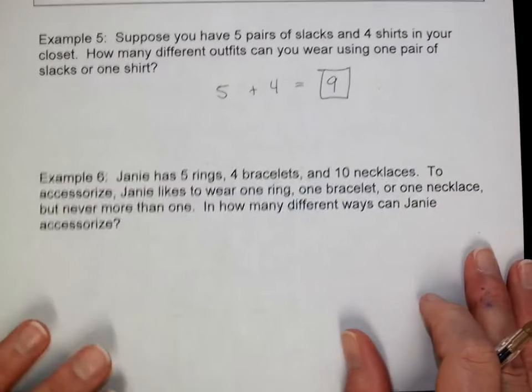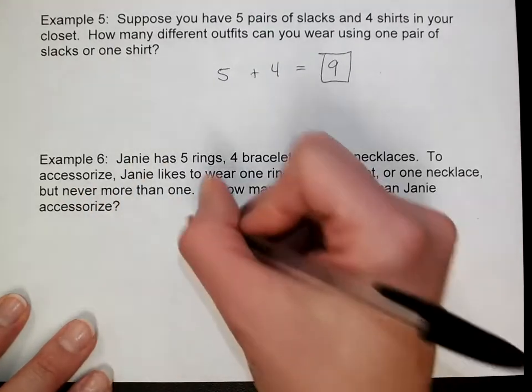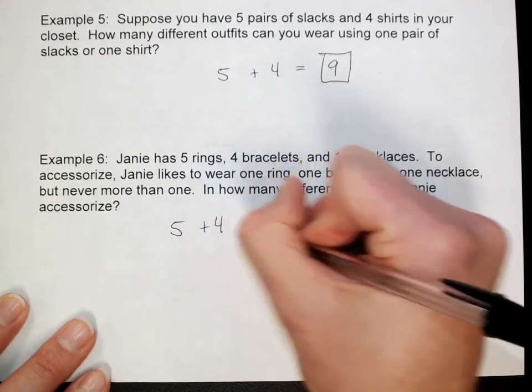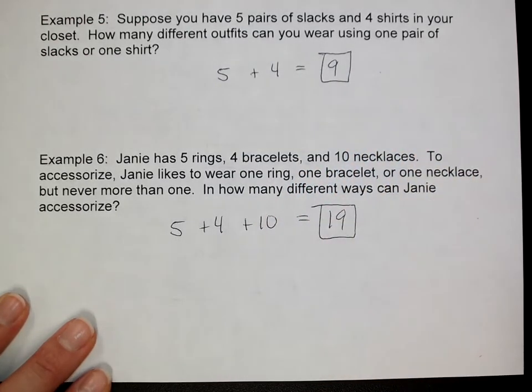Same thing here. She never wears more than one. So you have five rings plus four bracelets plus ten necklaces. This is pretty simple. There's 19 total possibilities.